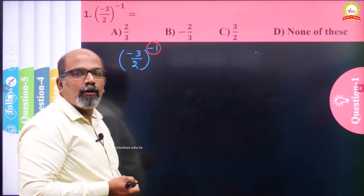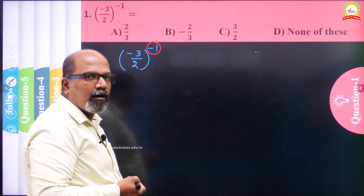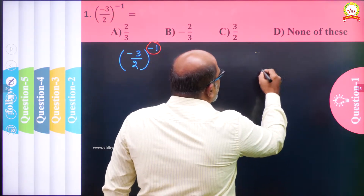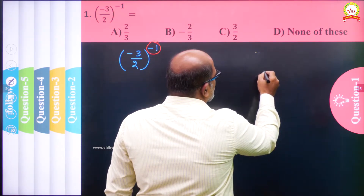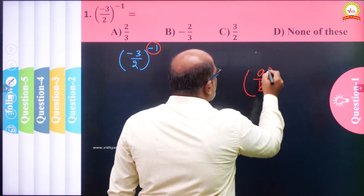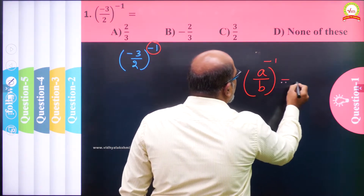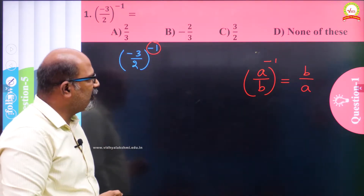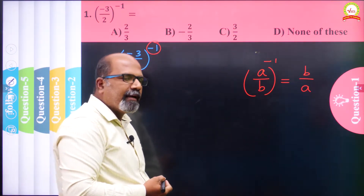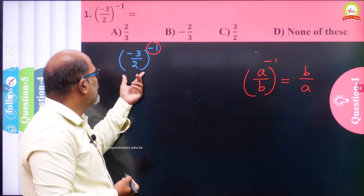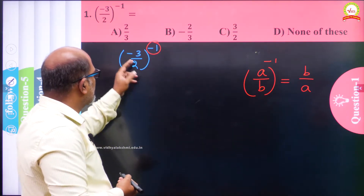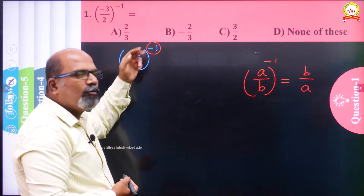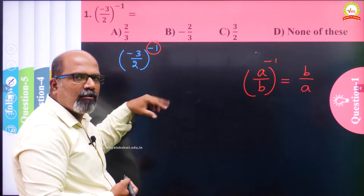What rule do we have to use? We have to use the law of negative exponent. If we have a/b the whole power minus 1, then we can write it directly as b/a. It is the inverse: (a/b)^(-1) = b/a. By the same way, here we have (-3/2)^(-1).